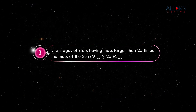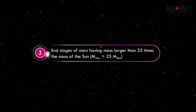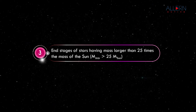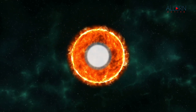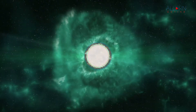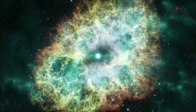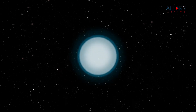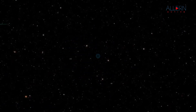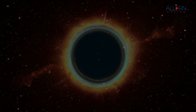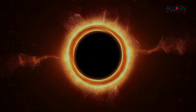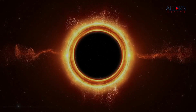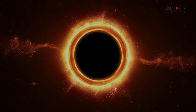The next group is for stars having mass larger than 25 times the mass of the Sun. These stars evolve like the stars in the second group, but after the supernova explosion no pressure is capable of balancing their huge gravitational force and they continue contracting forever. As their size becomes smaller, their density and gravitational force increase tremendously. All nearby objects get attracted towards these stars and nothing can come out of them — not even light.